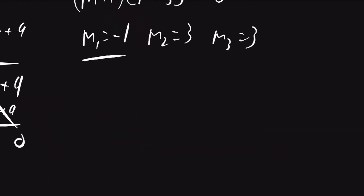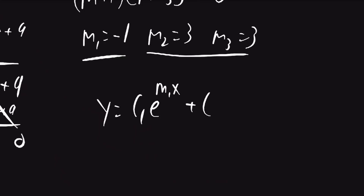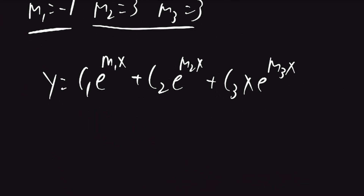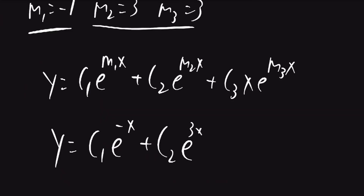Because the first root is different from the other two, y will include c1 times e to the m1·x. And because m2 and m3 are the same repeated root, we get plus c2·e to the m2·x plus c3·x·e to the m3·x. Substituting in the values, y equals c1 times e to the negative x, plus c2 times e to the 3x, plus c3 times x times e to the 3x.